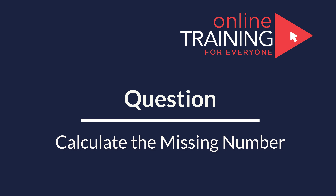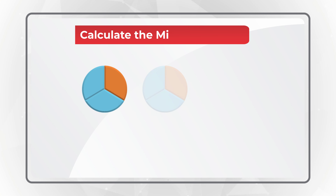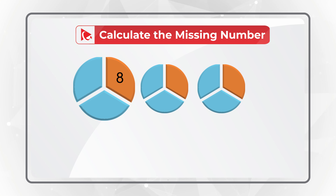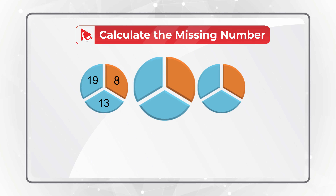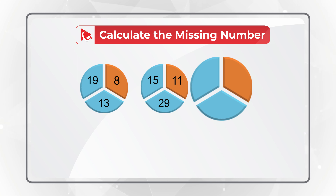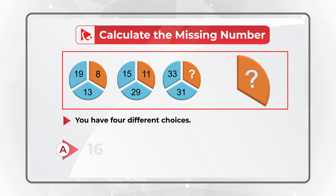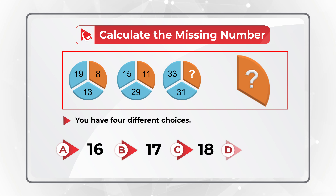Here's a puzzling question which has a very surprising solution. You're presented with three circles, each broken into three equal parts. The first circle has numbers 8, 19, and 13. The second circle has numbers 11, 15, and 29. The third circle has numbers 33, 31, and then one number is missing. You need to calculate the missing number out of four choices: Choice A, 16; Choice B, 17; Choice C, 18; and Choice D, 20.